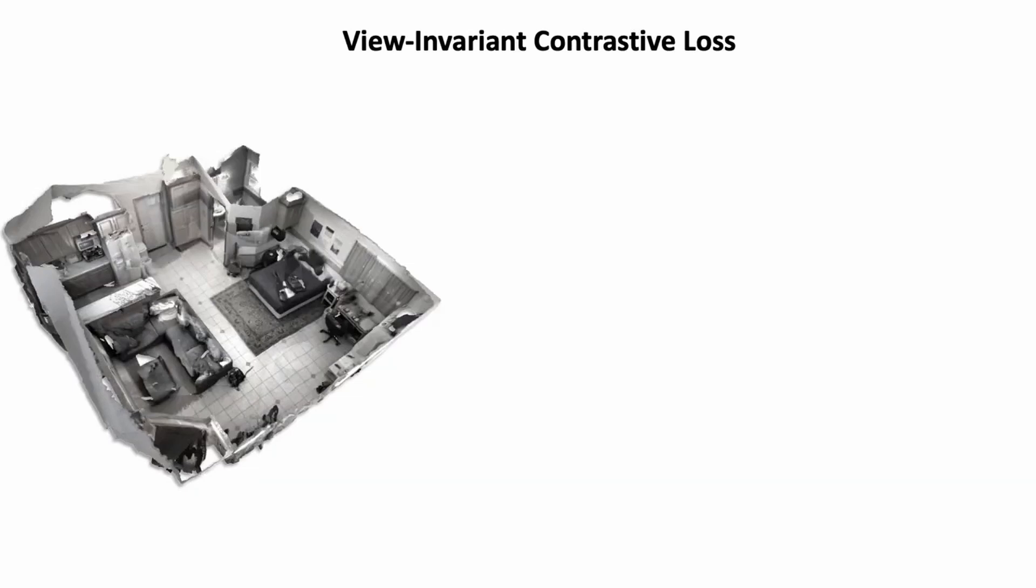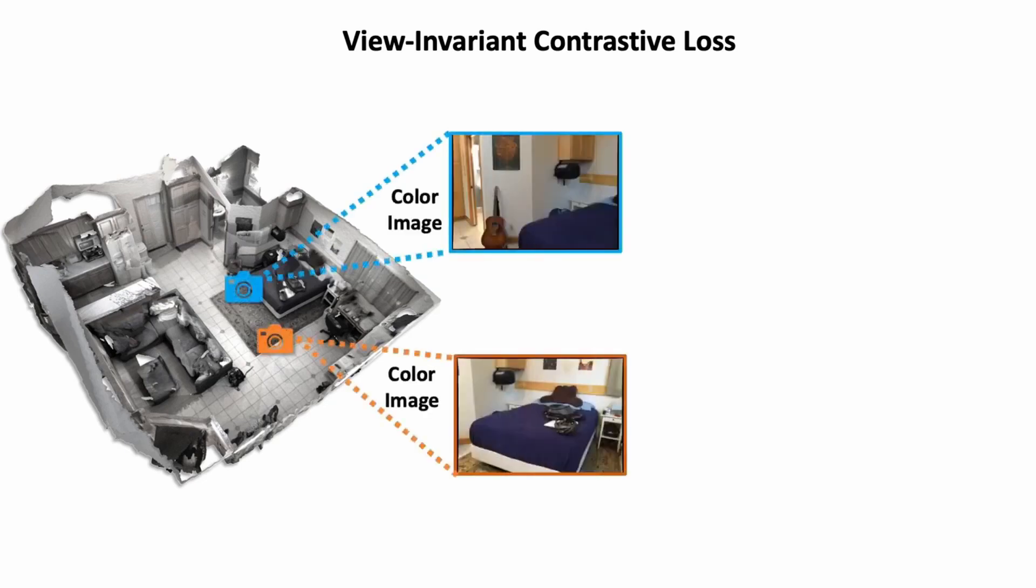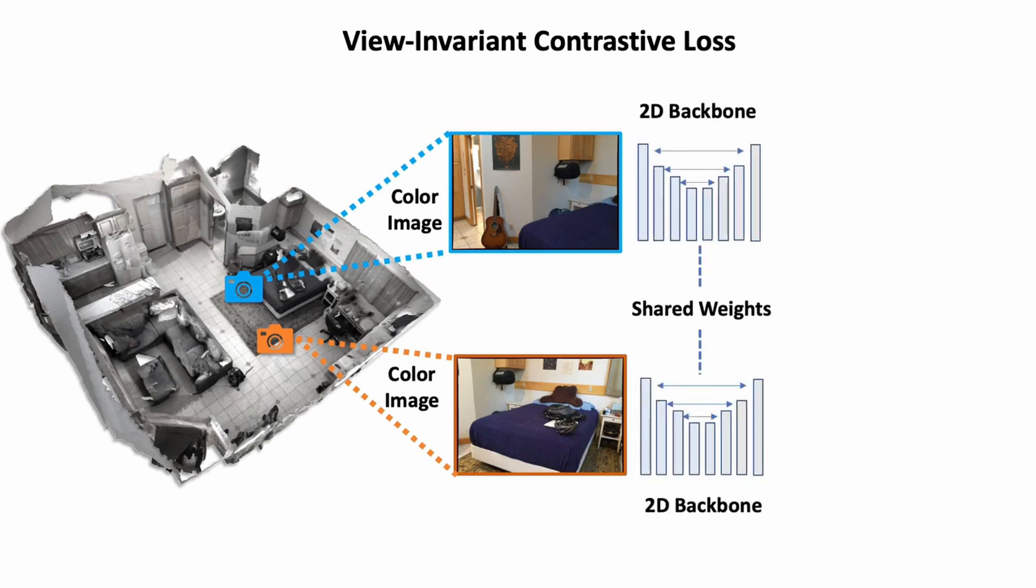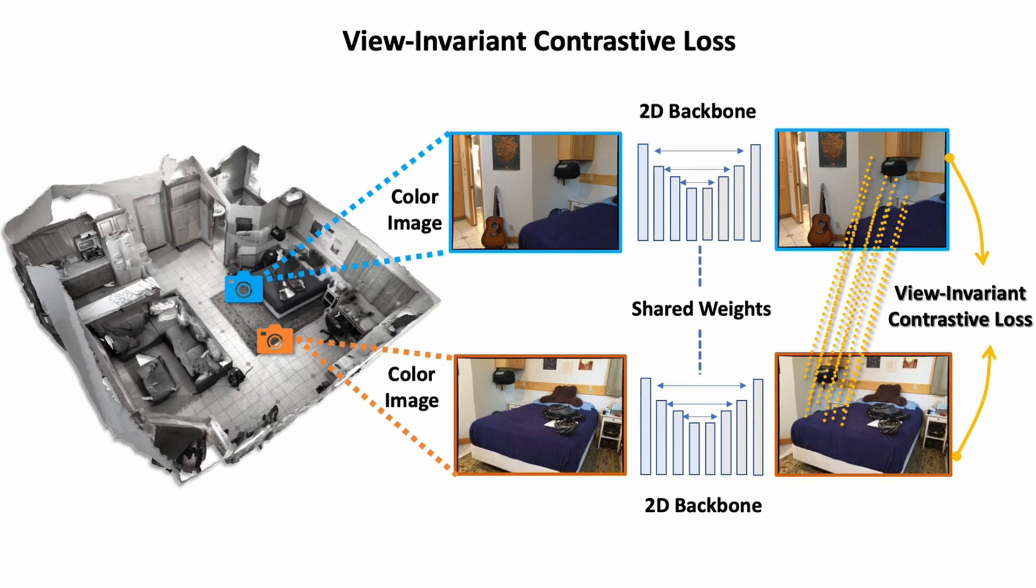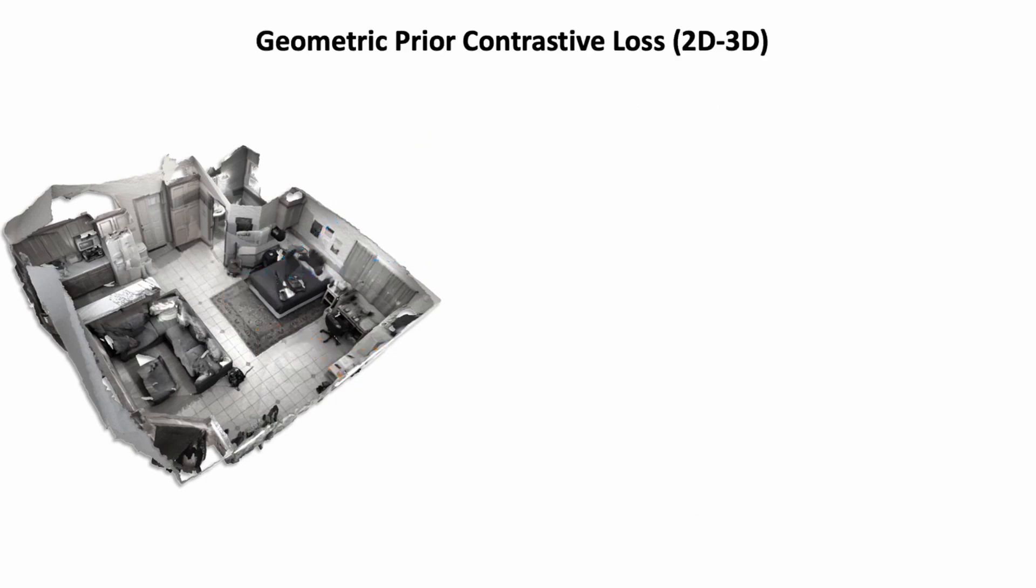We then pre-train by leveraging contrastive learning under our geometric constraints. For our view-invariant contrastive loss, we consider pairs of images with pixel-wise correspondences. The images are encoded with a shared 2D backbone. We can then construct our view-invariant contrastive loss between feature vectors from the output feature map based on their pixel-wise correspondence between images.